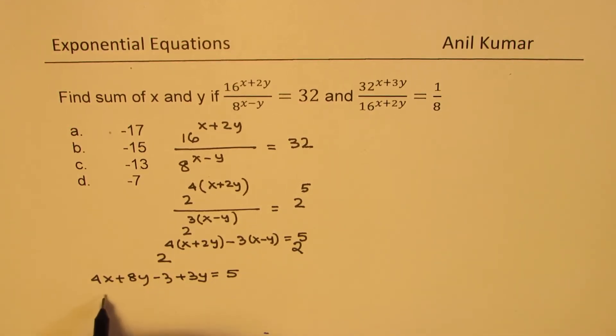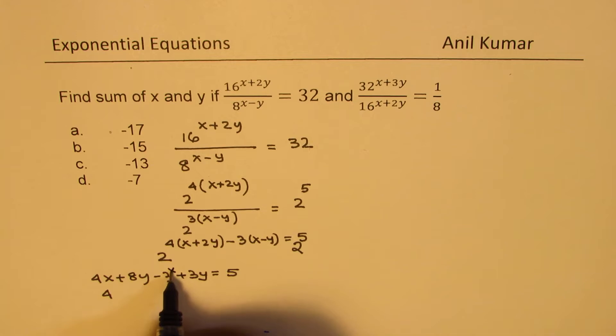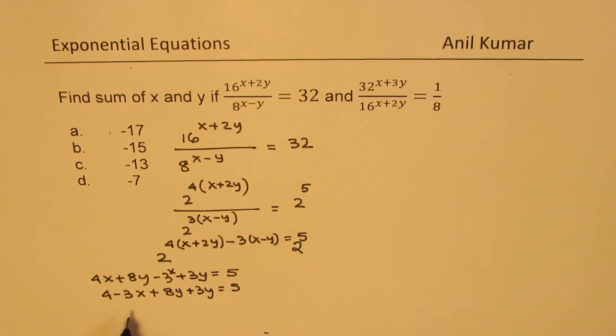Then simplifying, 4x minus 3x plus 8y plus 3y equals 5, which gives us x plus 11y equals 5. So we get one equation which is x plus 11y equals 5.